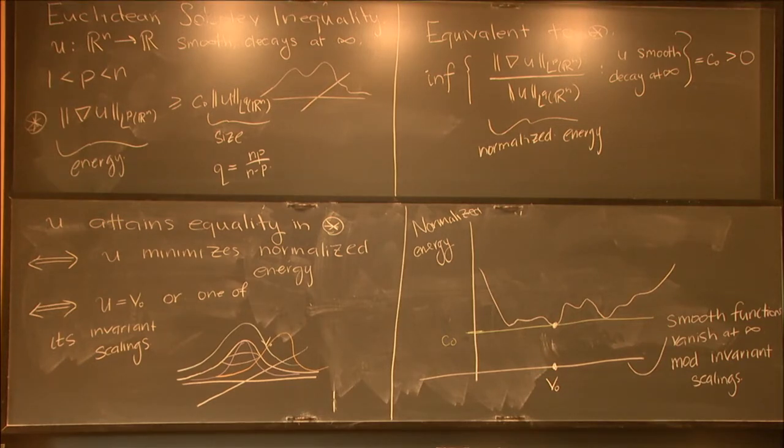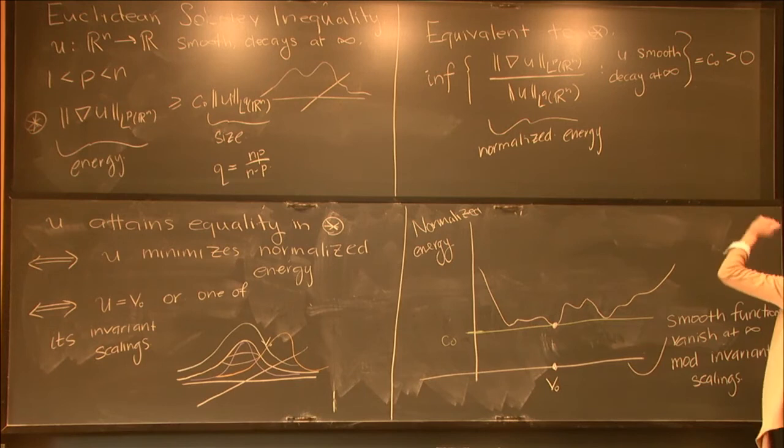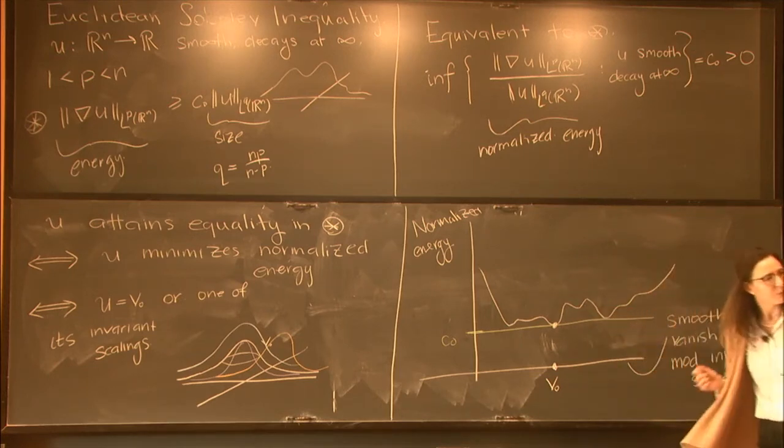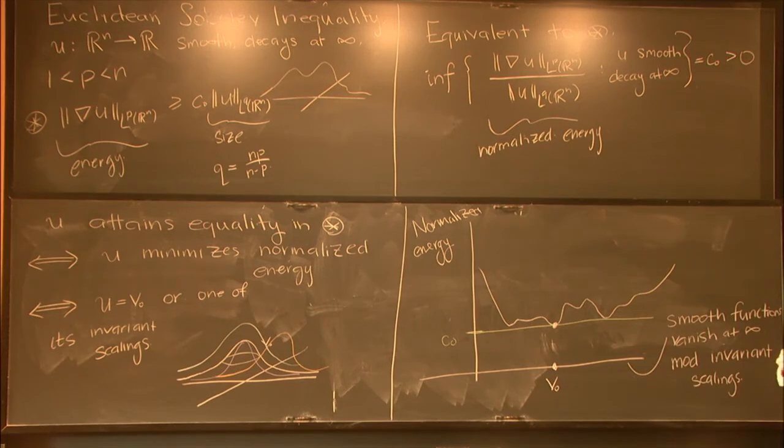And so then you basically turn yourself into a one dimensional situation where you're looking for solutions of an ODE. This does not a priori give you uniqueness. There are two—so historically, the case p equals two was known much before, that the extremals were unique here, and that was on the level of the Euler-Lagrange equation. Sort of if you compute the first variation of this functional, it gives you a PDE on all of R^n, and Obata proved actually the only critical points are these functionals.